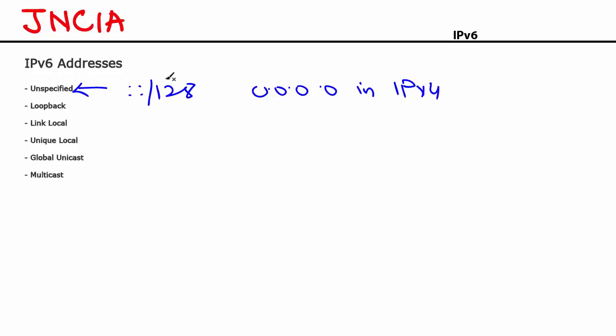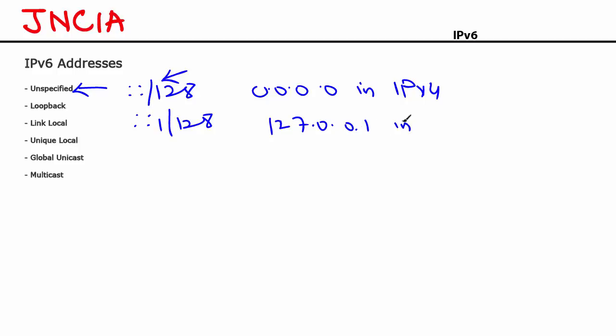You should never manually assign the unspecified address to a host. If you did, the router will not forward a packet coming from that address ::/128. The next one is loopback. A loopback address is used to talk to itself. It is represented as ::1/128, which means it has all zeros and the last character is a 1. This is the same as 127.0.0.1 in IPv4.